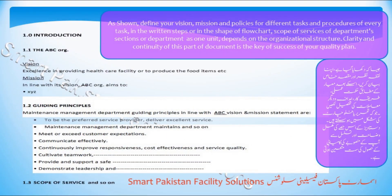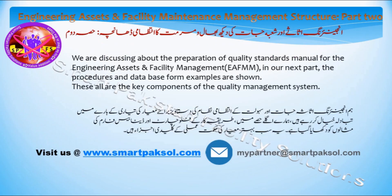The next step, as shown, is to define your vision, mission, and policies for different tasks, and procedures for every task — either in written steps or in the shape of a flowchart. Define the scope of services of department sections or the department as one unit, depending on the organizational structure. Clarity and continuity of this part of the document is the key to success of your quality plan.